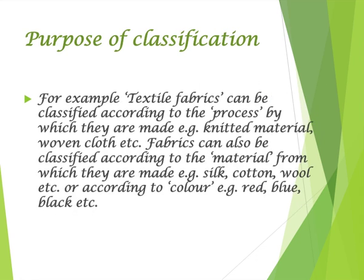For example, textile fabrics can be classified according to the process by which they are made — for example, knitted material, woven cloths, etc. Fabrics can also be classified according to the material from which they are made — for example, silk, cotton, wool, etc. — or according to color: red, blue, black, etc.